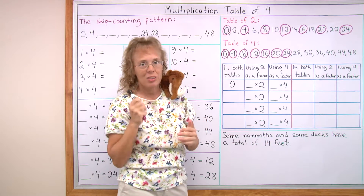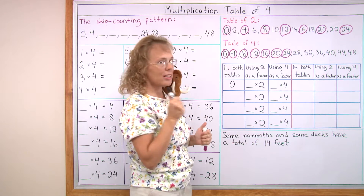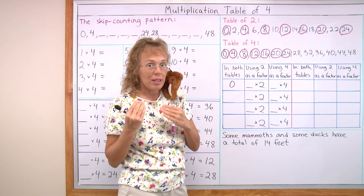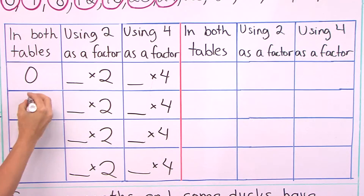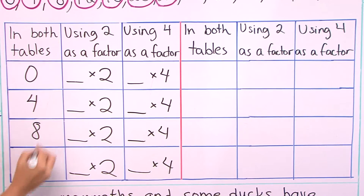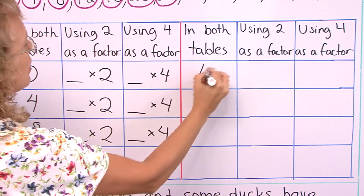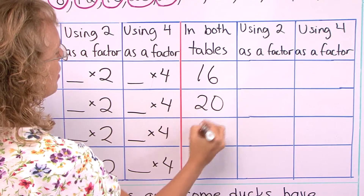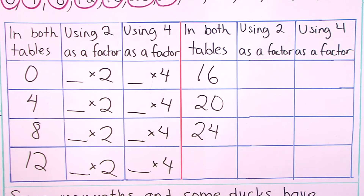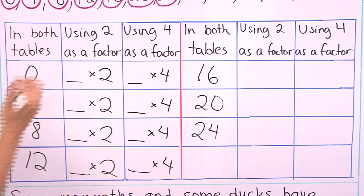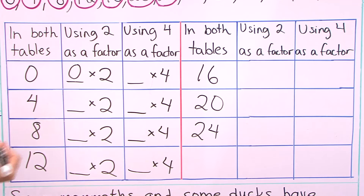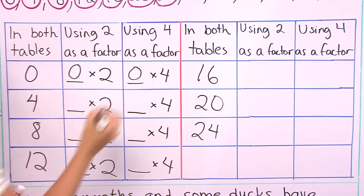Now we're going to do something special with this table. I'm going to take each number that was in both lists and write it here: 0, 4, 8, 12, 16, 20, and 24. And now we're going to write these numbers as multiplications. So 0, for example, is 0 times 2 — that's how it is in the table of 2 — and then it is 0 times 4 in the table of 4.